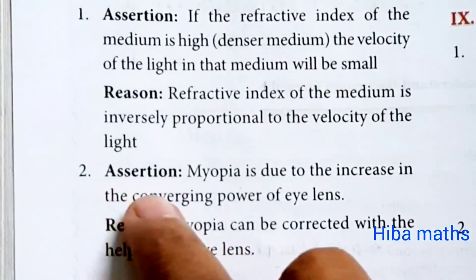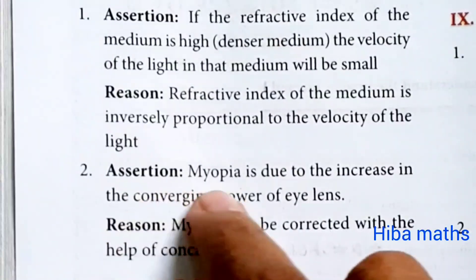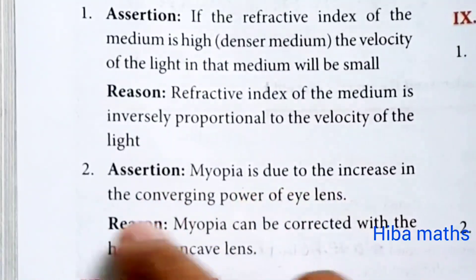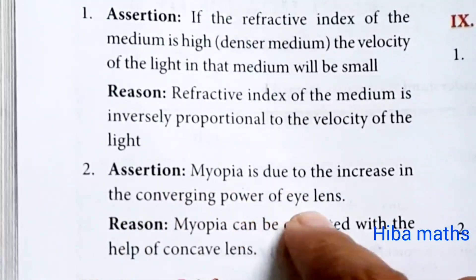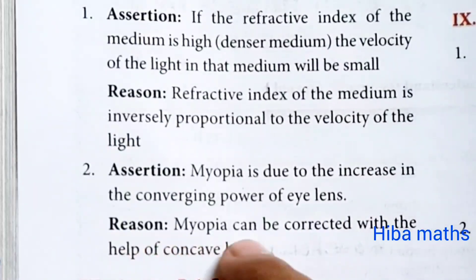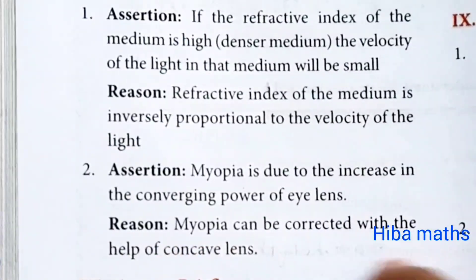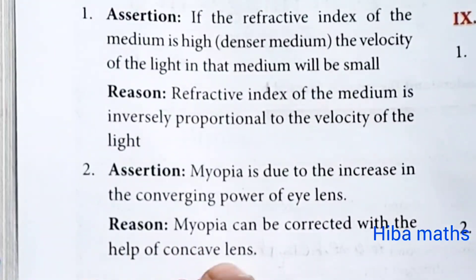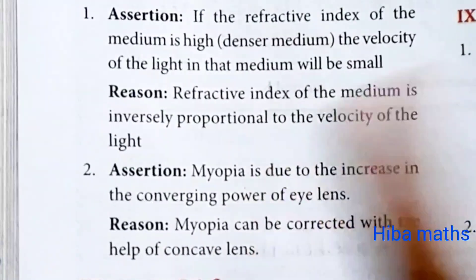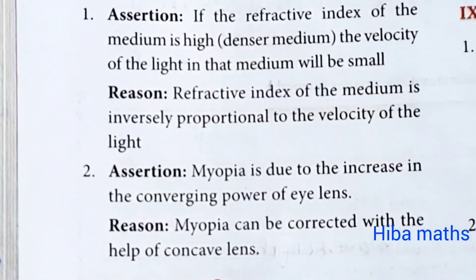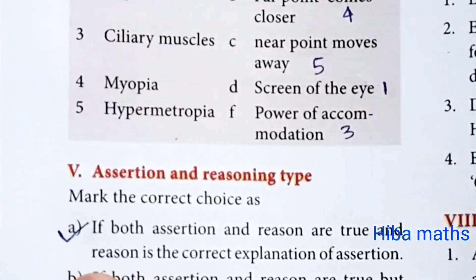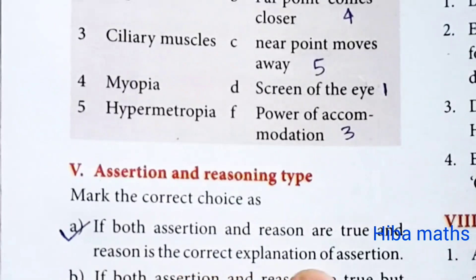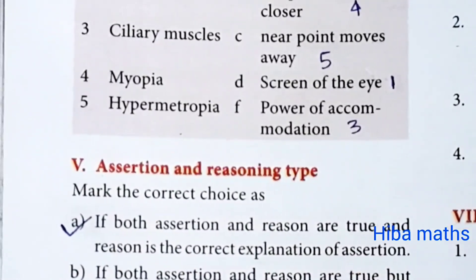Second question — Assertion: myopia is due to the increase in the converging power of the eye lens. Reason: myopia can be corrected with the help of a concave lens. Answer: both assertion and reason are true and reason is the correct explanation of the assertion.